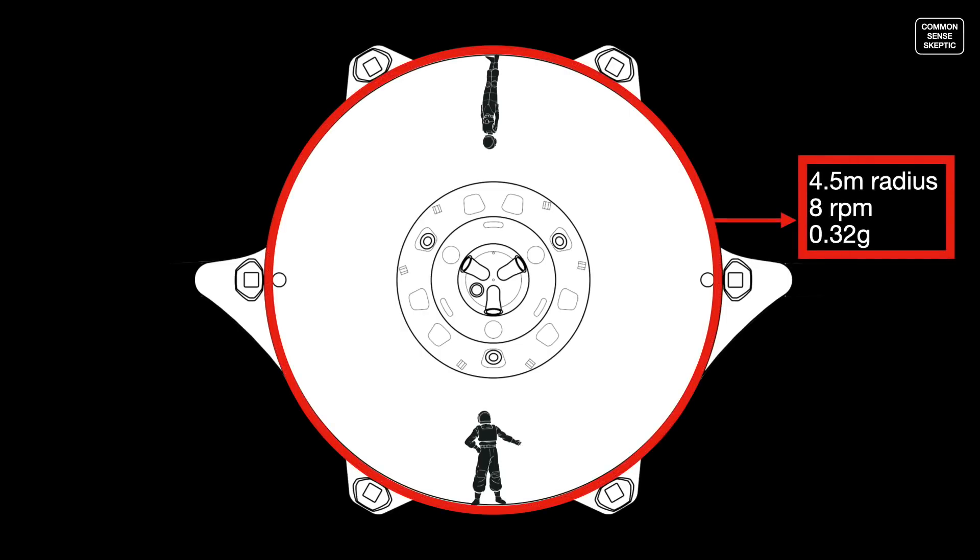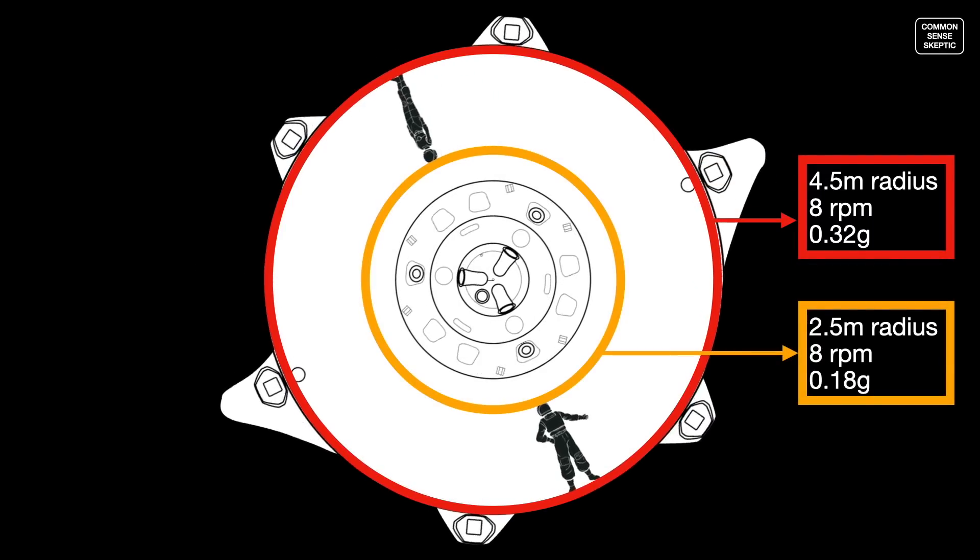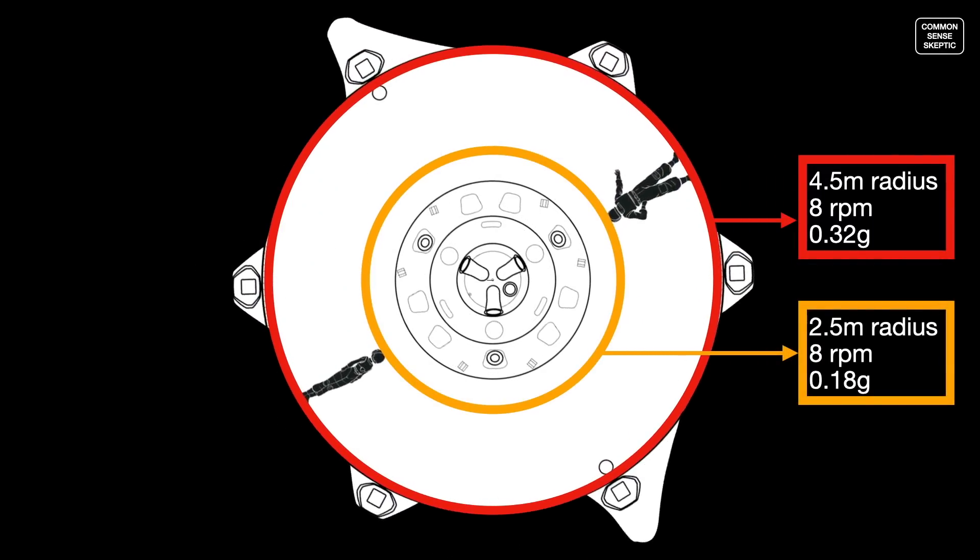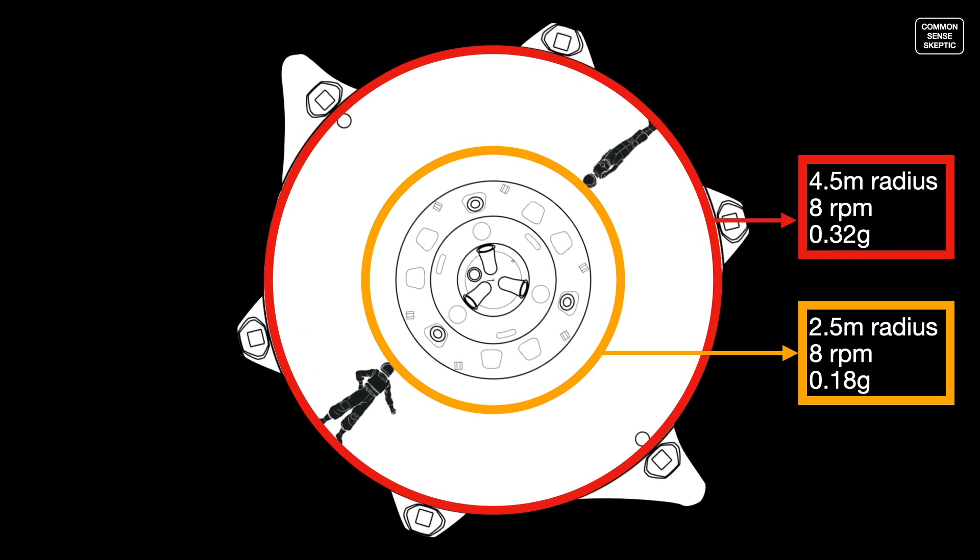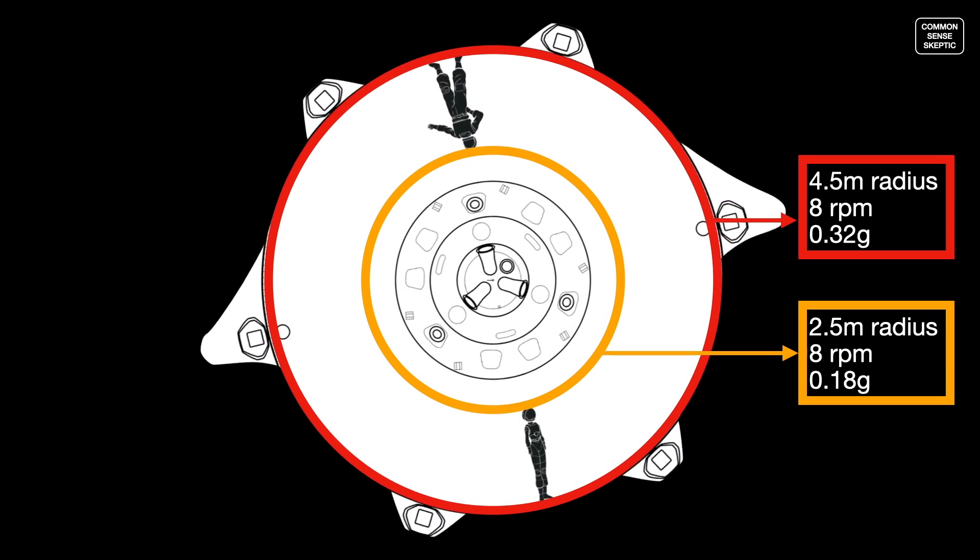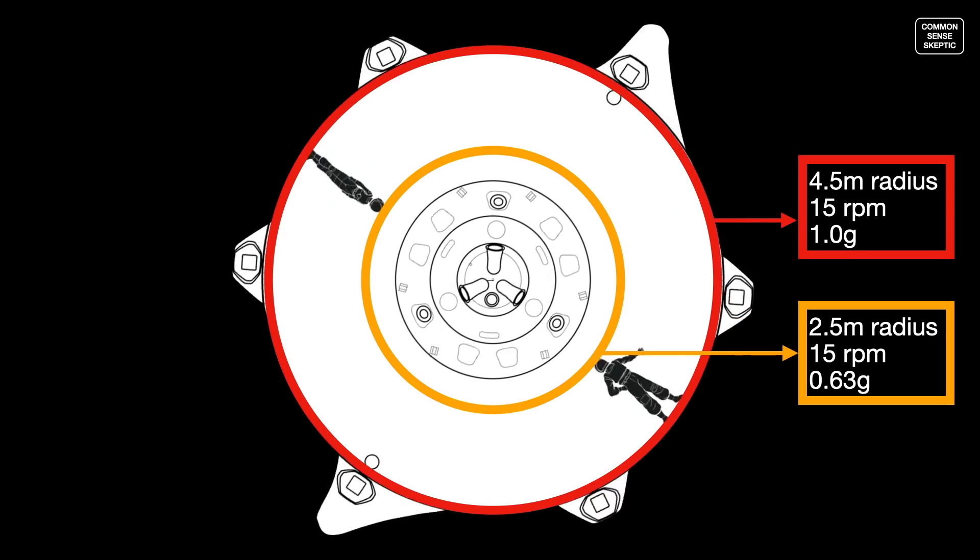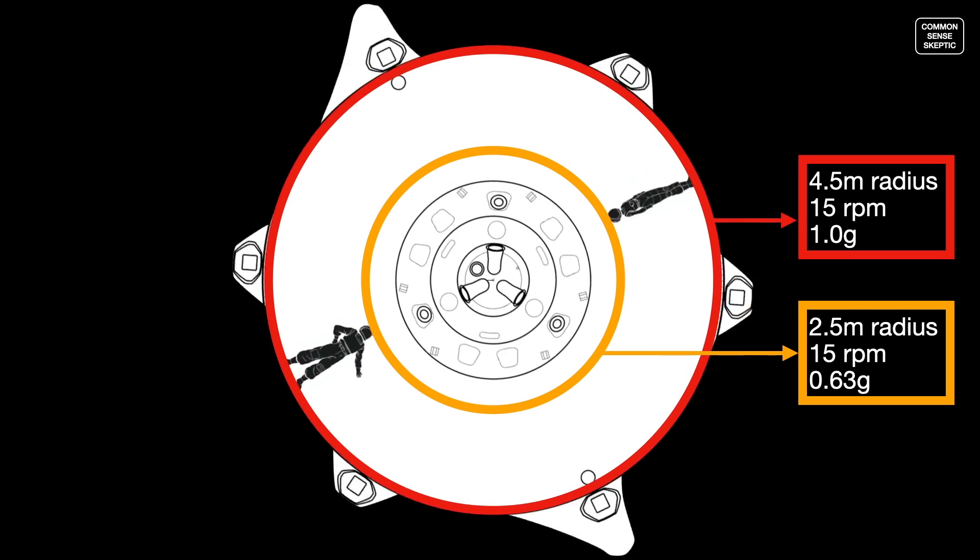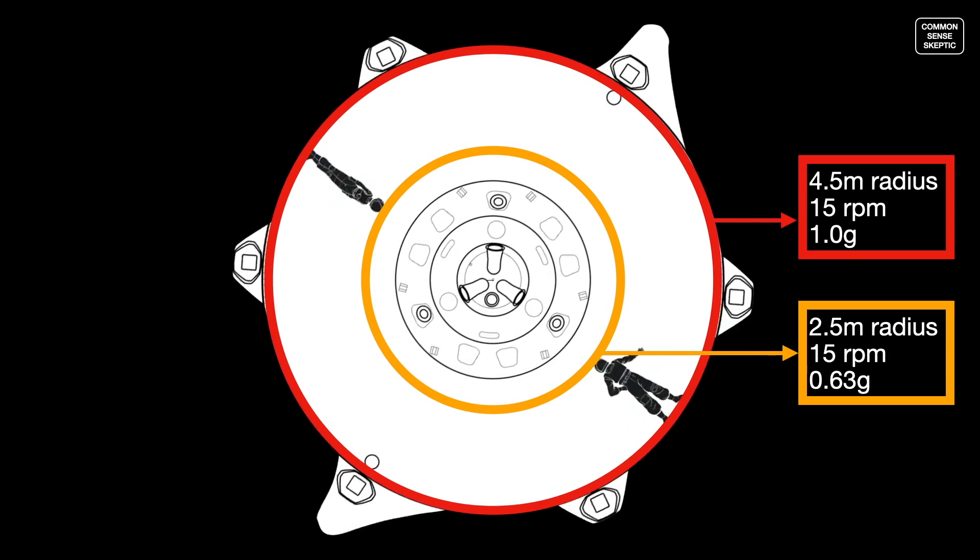To mimic Martian levels of gravity, this vehicle must rotate almost 9 times per minute. Now, remember the tidal forces? Look at the difference between the gravity affecting their feet versus what they are experiencing in their head, where the inner ear is located. This is a significant enough difference that simply touching their toes and standing back up could cause them to become dizzy and disoriented. To achieve Earth's 1g of gravity, those rotations need to be bumped up to around 15 rpm, or 1 revolution every 4 seconds, making the tidal forces even greater.